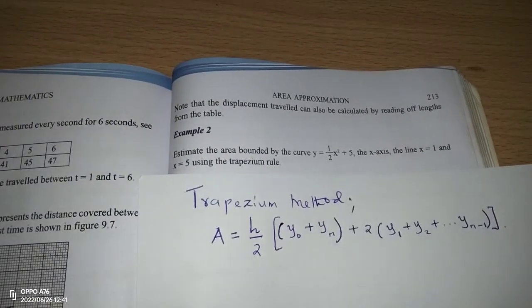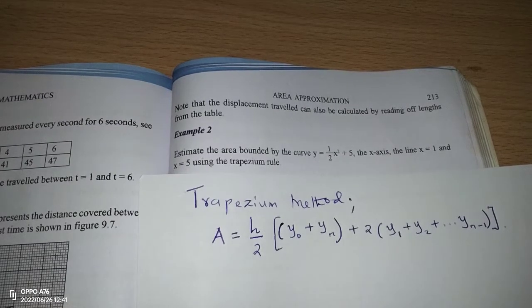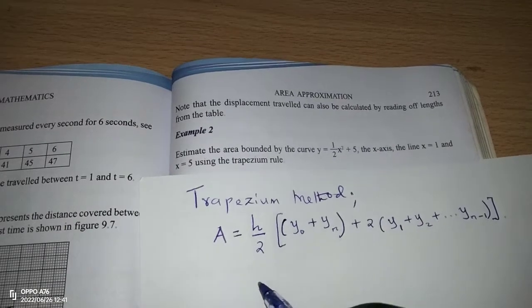So this is the general formula we use in the calculation of area, or the approximation of area, using trapezoidal rule.